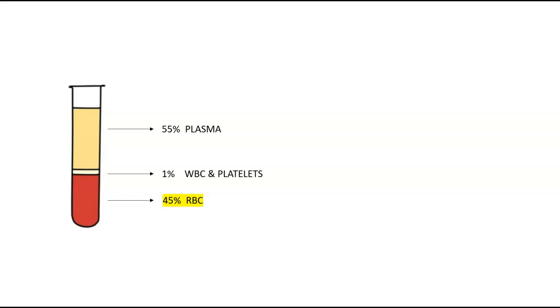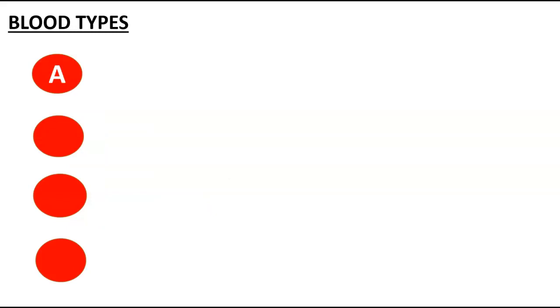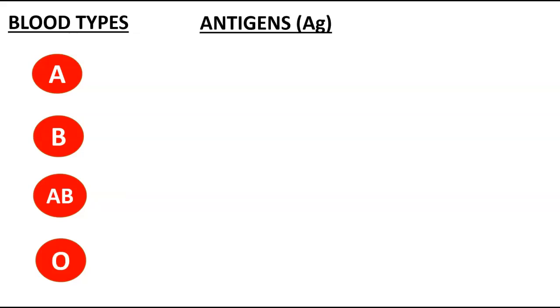Now let's jump into our blood types. We have four blood types: A, B, AB, and O. The first thing you have to understand about blood types is antigens. Antigens are surface markers of the RBCs — basically they're your identity tags, found on the surface of the red blood cell membranes. Whatever surface antigen you have determines your blood type, and the antigens gave rise to the names.